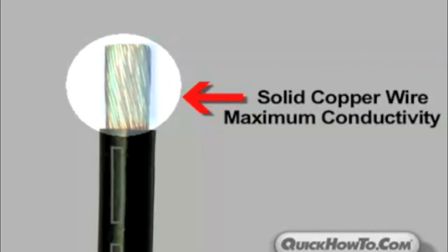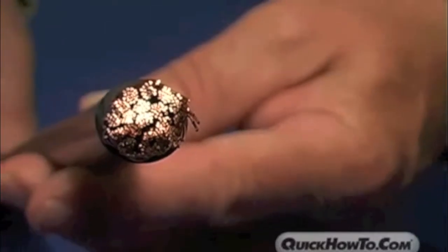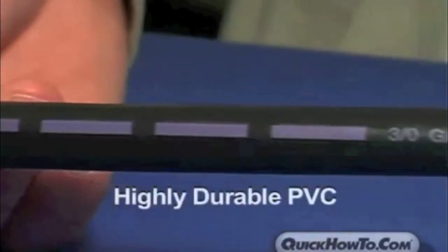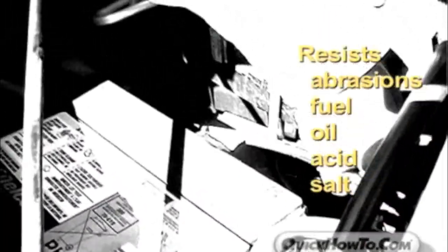In addition to its core copper construction, all Quick Cable Battery Cable is insulated with highly durable PVC, an insulation that is extremely flame retardant and resistant to abrasion, fuel, oil, acid, and salt.